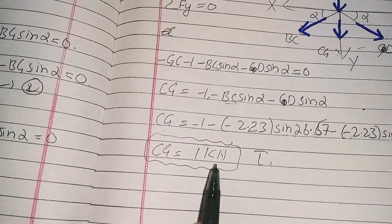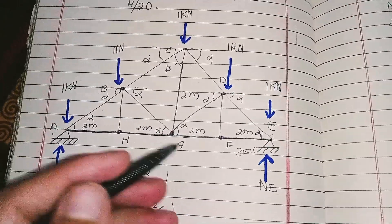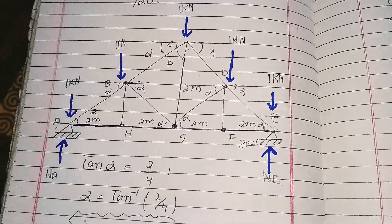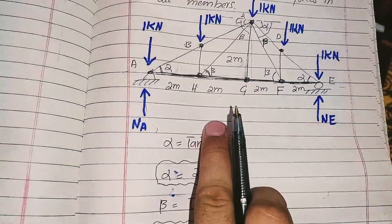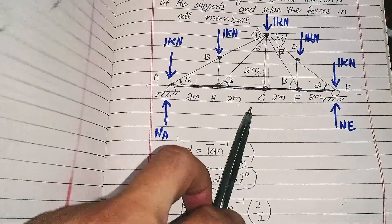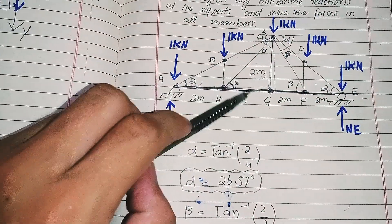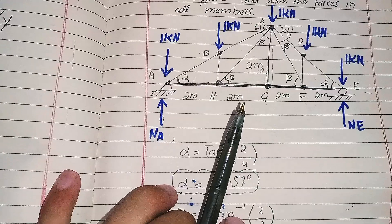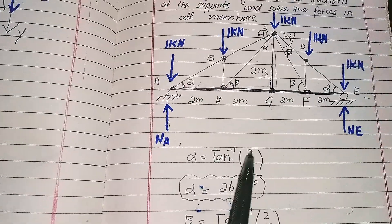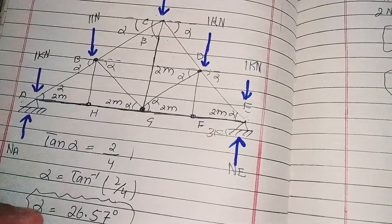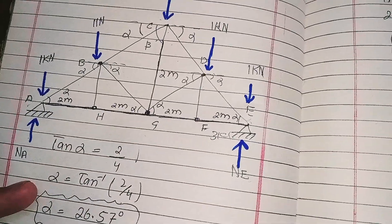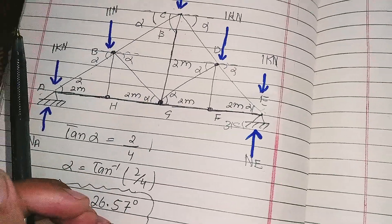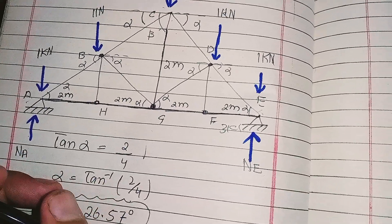When you compare all the tension and compression forces in the members of this truss with problem 20, you will see only a very minute difference, because the loads are identical — only the shapes are different. There is no huge difference in the internal forces between the two truss shapes. So when deciding which truss design to use, since there is no significant loading difference, the choice may come down to aesthetic or practical considerations. Thank you very much.